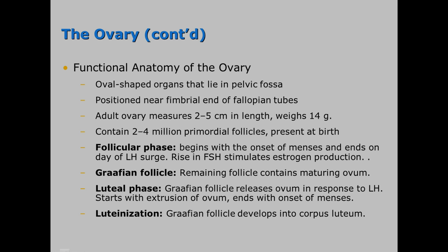The ovary goes through different phases. The follicular phase begins with the onset of menses and ends on the day of an LH surge. A rise in FSH stimulates estrogen production. The graafian follicle is the remaining follicle containing a mature ovum. In the luteal phase, the graafian follicle releases the ovum in response to LH, starting with the extrusion of the ovum and ending with the onset of menses. Luteinization is where the graafian follicle develops into a corpus luteum.